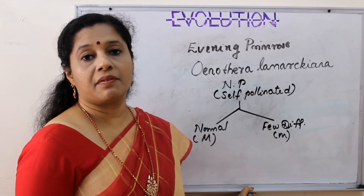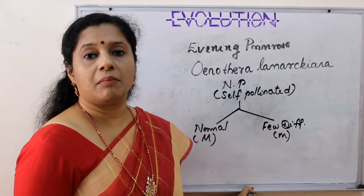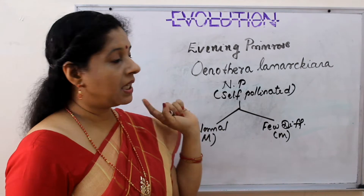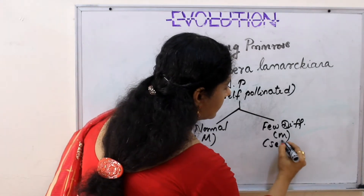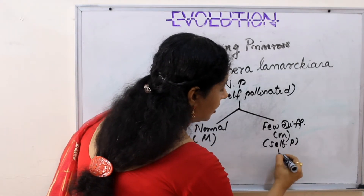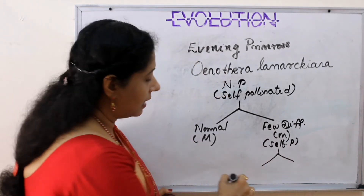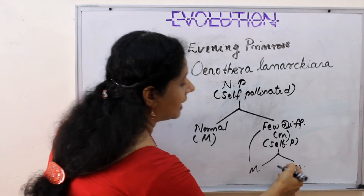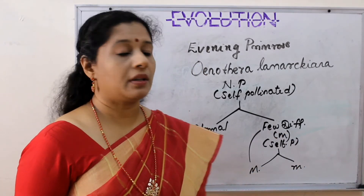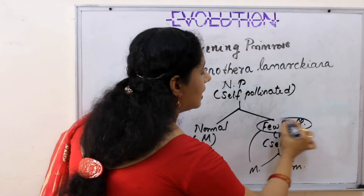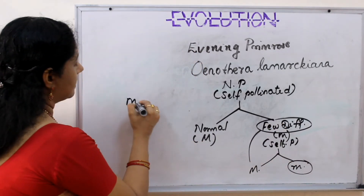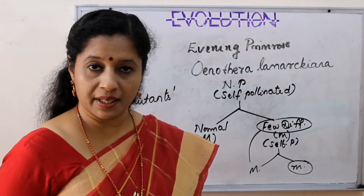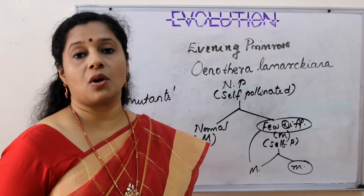A few plants were different from the parent plant - their flower shape was different, leaf shape was different, stem color and size of the bud - lots of differences compared to the parent plant. Again he self-pollinated these, collected the seeds, and grew them again - two types appeared. Majority of plants were like the parent plant, and a few plants were again a new type. These new types he called mutants, and the process is called mutation.